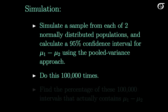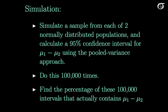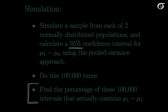We're going to do this 100,000 times, and then find the percentage of those 100,000 intervals that actually contains mu1 minus mu2. If this procedure is working well, this percentage should be very close to 95%, and if it's working poorly, this percentage will be very different from 95%. Let's see what the results look like.